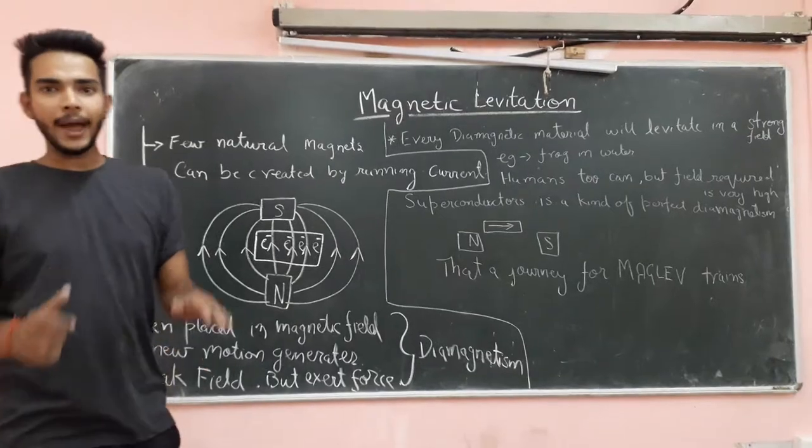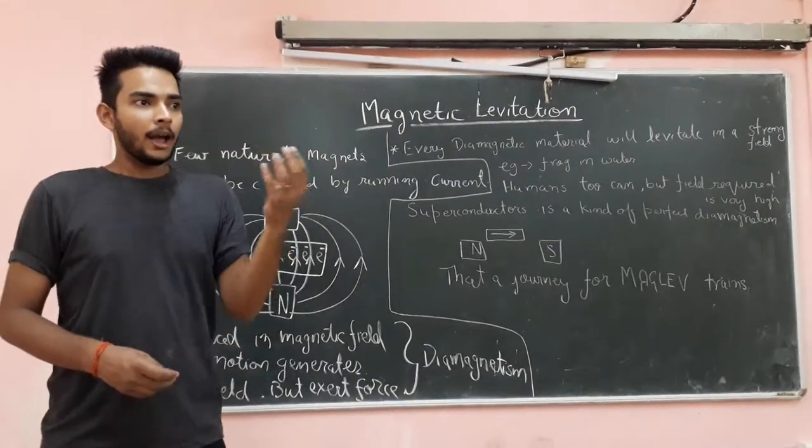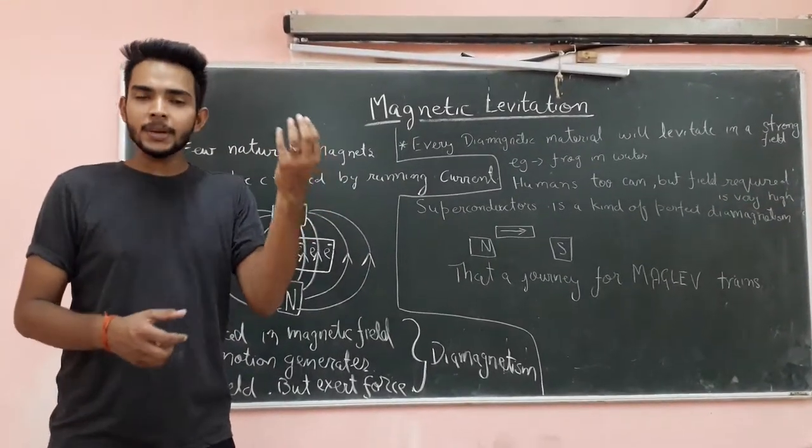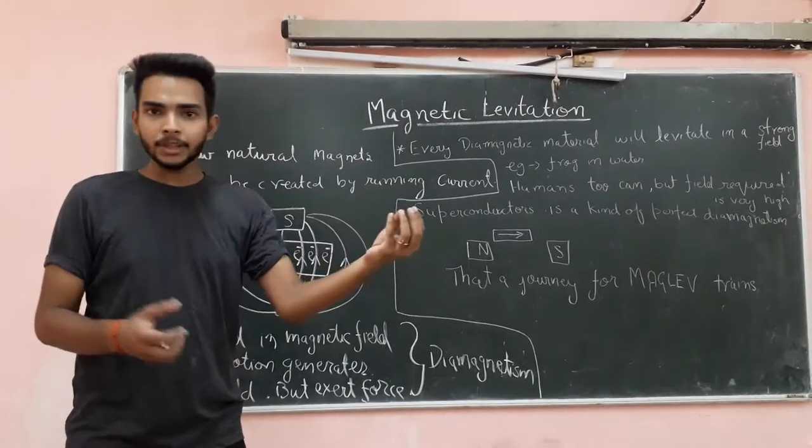So basically, what is a magnet? A kind of material which has certain properties, which attracts something or which repels something.